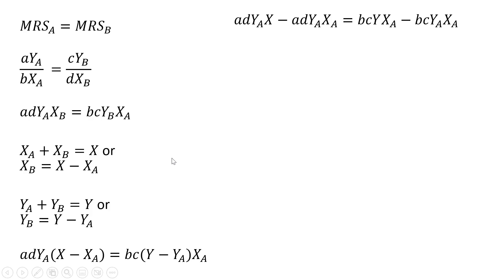Next I'm going to multiply through. This ADY term I'll multiply through what's in parentheses. On the right-hand side, I'll take BC and multiply through by what's in parentheses, and likewise do the same with XA, multiplying that through by what's in parentheses. Doing that, we get this result.